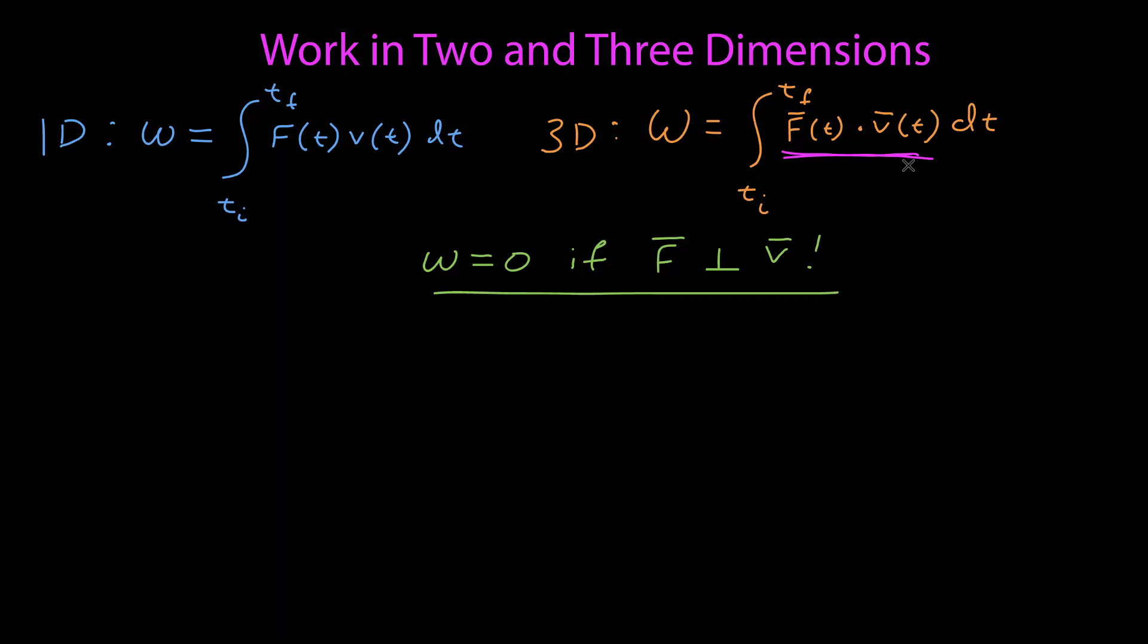And you might think, well, maybe that's a very special case. But we ran into that special case all of the time. For example, if I have something sliding along the ground, both the normal force and, in this case, the force due to gravity, are both perpendicular to the velocity, and so the work done by both of those forces is equal to 0.